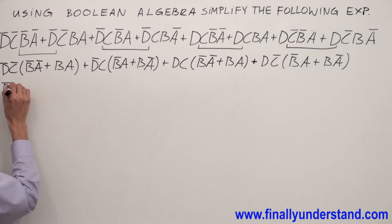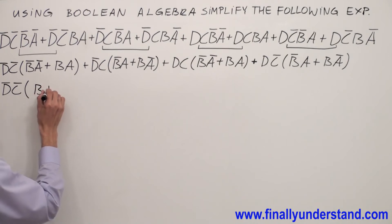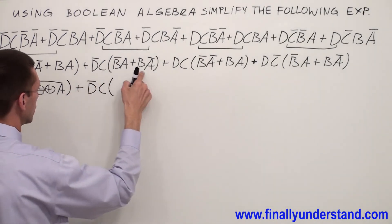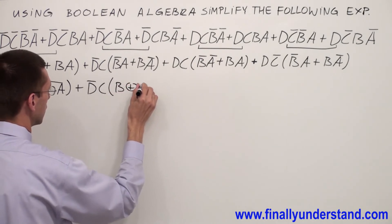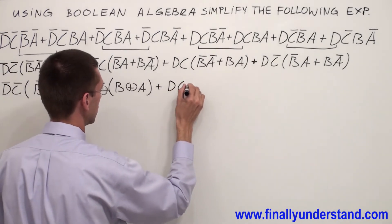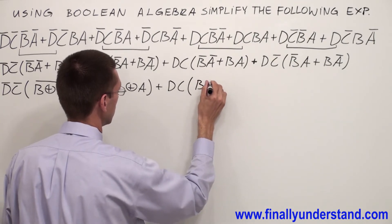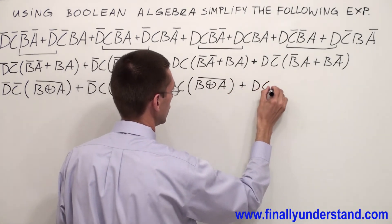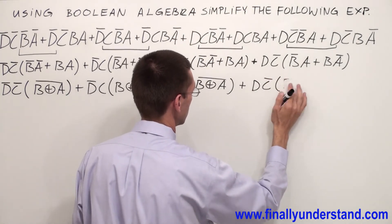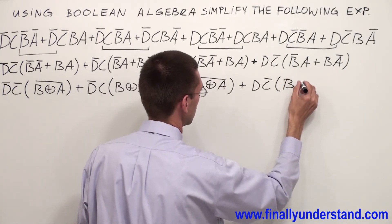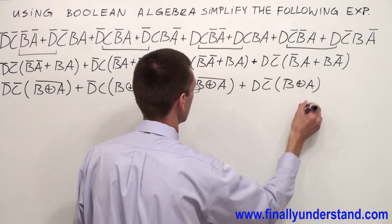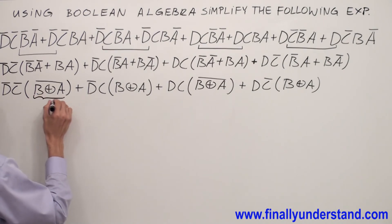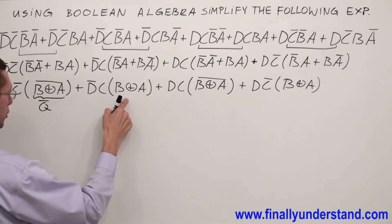Let me rewrite this one more time. I'm going to have D̄C̄ with exclusive NOR, plus D̄C with exclusive OR, plus DC with exclusive NOR, plus DC̄ with exclusive OR. Now, exclusive NOR is the complement of exclusive OR — that's why I'm going to call exclusive NOR Q̄ and exclusive OR Q.